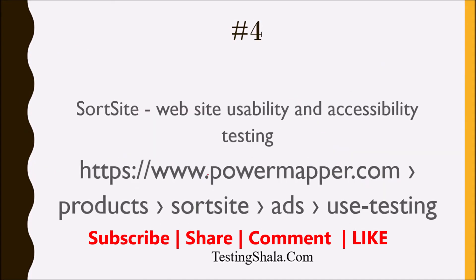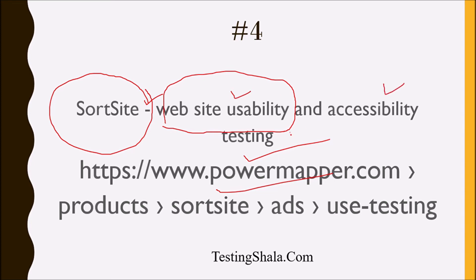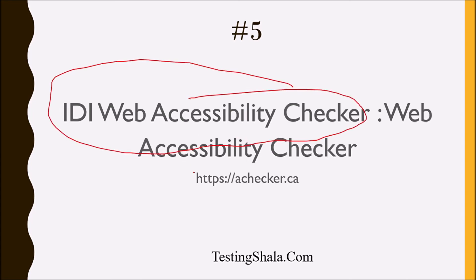The fourth is Power Mapper — a company which provides the SortSite accessibility tool, which can be used for website accessibility testing. The fifth is the IDI Web Accessibility Checker, also called the accessibility checker or e-checker.